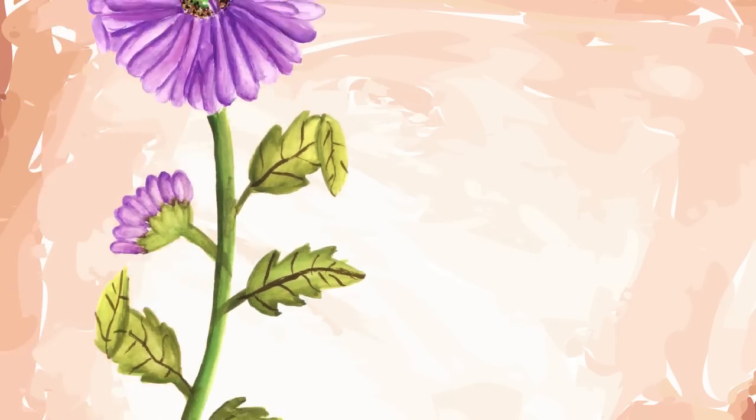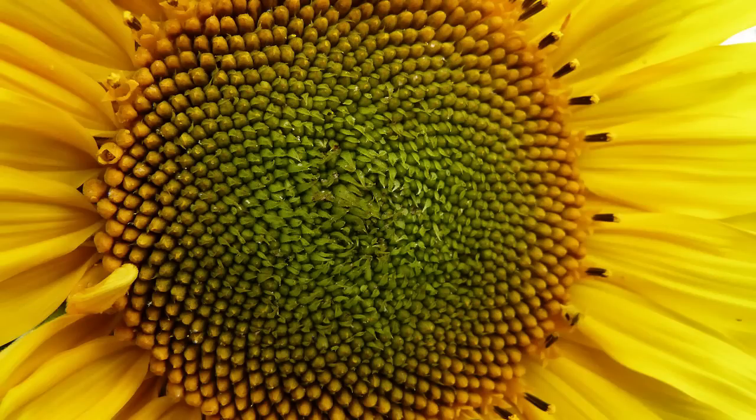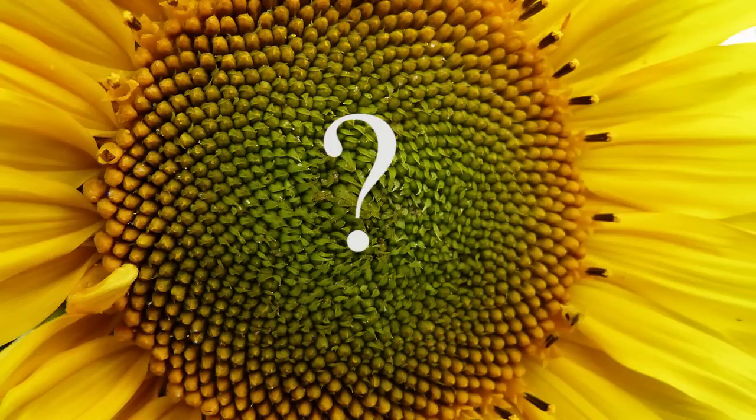Done with leaves, now on to flowers. These tiny florets on the head of a sunflower arrange themselves in beautiful spirals. But why this arrangement you ask?